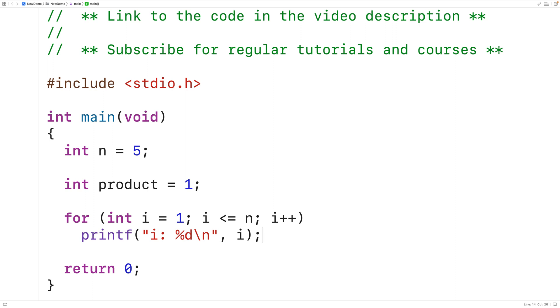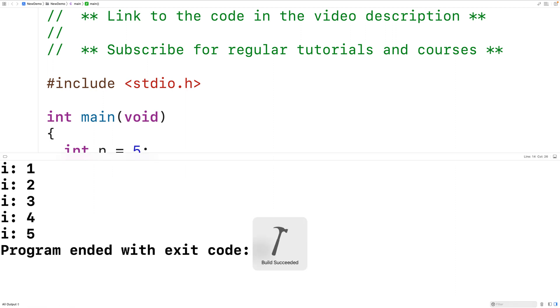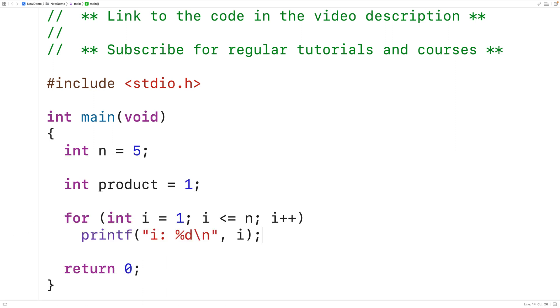So if we save, compile, and run our program, we get i is 1, i is 2, i is 3, i is 4, and i is 5. That's exactly the numbers that we need to multiply together to get the factorial of n, which is 5.